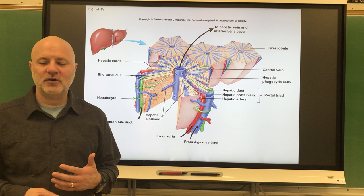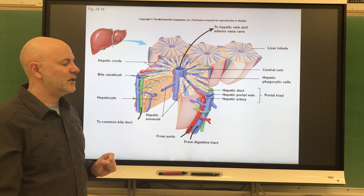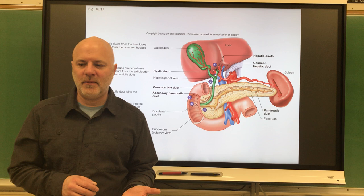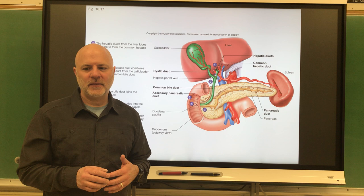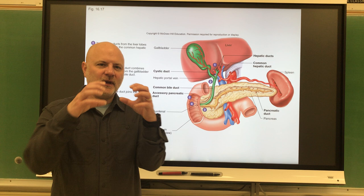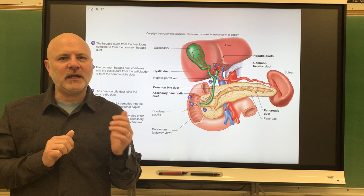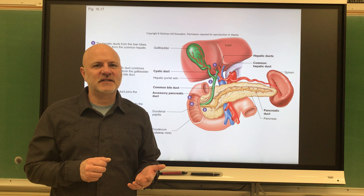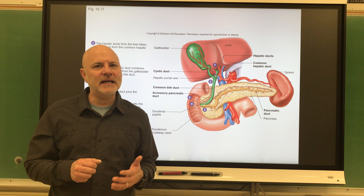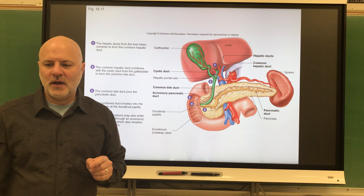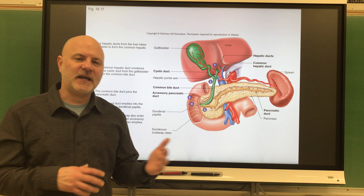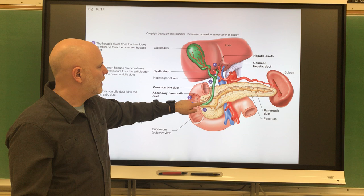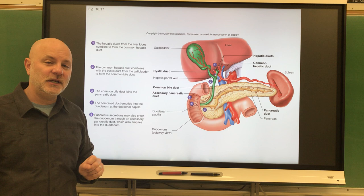Lastly, the liver secretes bile. Bile is a fluid secreted by the liver and stored in the gallbladder. It aids digestive enzymes by breaking down large fat molecules into smaller droplets — a process called emulsification — which allows lipases to work on them more effectively. It also enhances absorption of fatty acids, cholesterol, and fat-soluble vitamins A, D, E, and K. The gallbladder is a sac-like organ associated with the liver that stores and concentrates bile by removing water from it. The liver and gallbladder release their secretions into the duodenum, the beginning of the small intestine, just like the pancreas does.